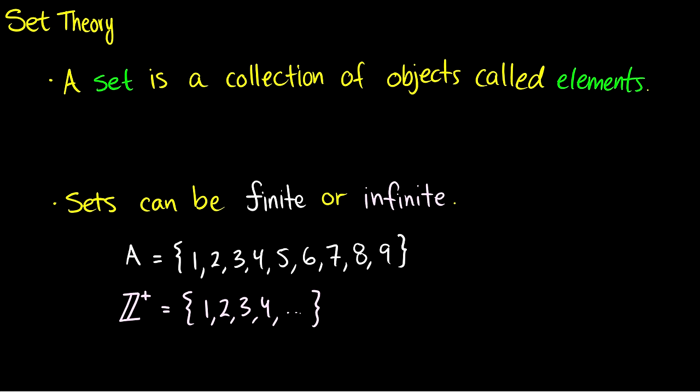So what is a set? A set is a collection of objects called elements, and this is very vague because we can have a set about anything we want. Usually we talk about sets by drawing these little circles. So for instance, if I want a set of the numbers one, two, and three, I can draw a circle and put the numbers one, two, and three in there.